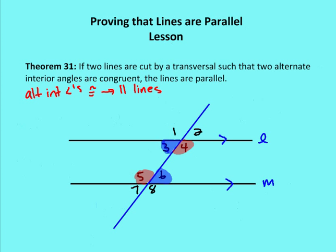Now for Theorem 31: if two lines are cut by a transversal such that two alternate interior angles are congruent, then the lines are parallel. So if angle 3 is congruent to angle 6, then line L is parallel to line M. Similarly, if angle 4 is congruent to angle 5, then line L is parallel to line M.